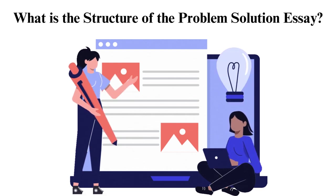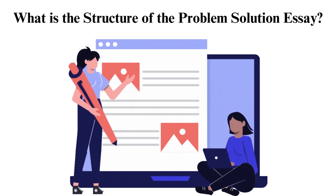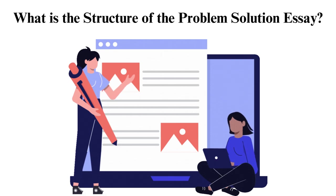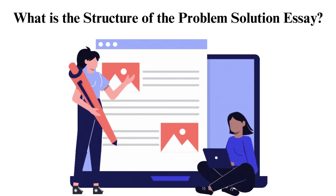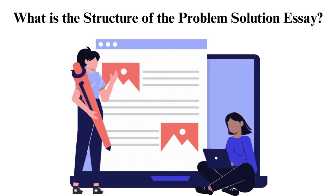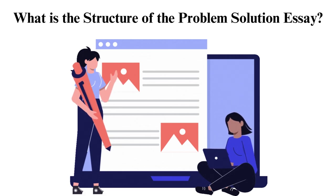How to start a problem and solution essay. This essay, just like other types, should start with an introduction. This part should consist of the problem's background information or the situation. Ensure you explain the problem's cause briefly. Later, you should have a preview of the essay. Mention a few things you will discuss in the article to build curiosity in the reader.